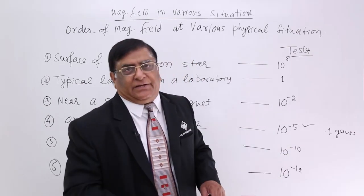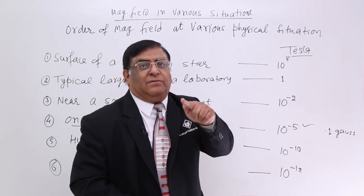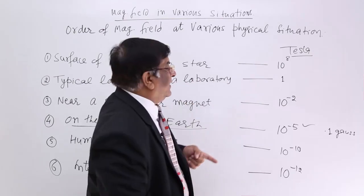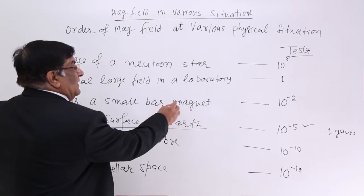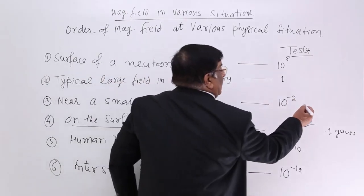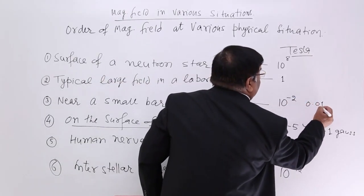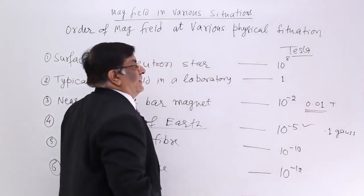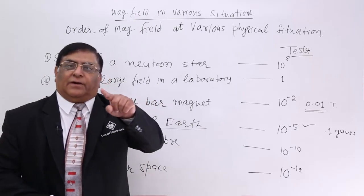But this is on the surface of the Earth. Now if you go near a bar magnet - in the market you are buying bar magnets - if you go near a bar magnet, then it is 10 to the power minus 2, that is 0.01 tesla. This is the magnetic field for a bar magnet.